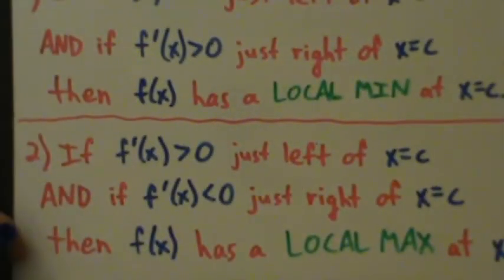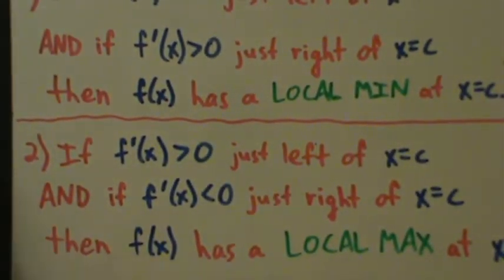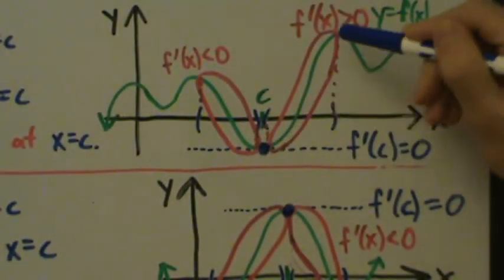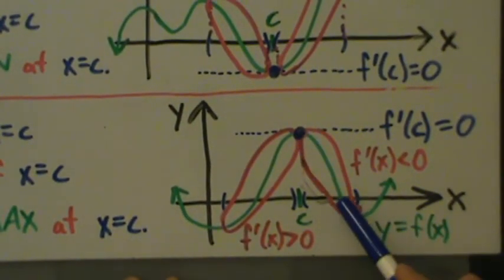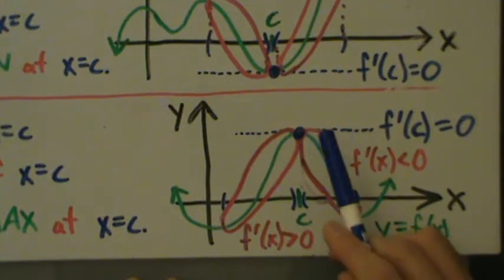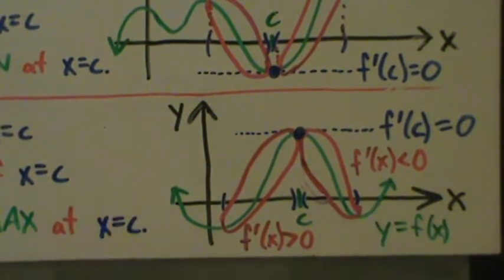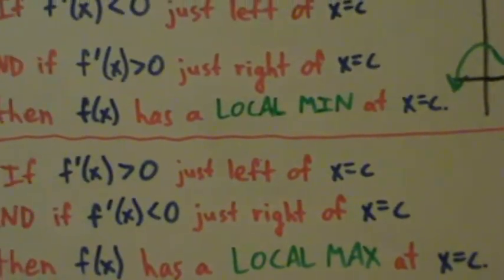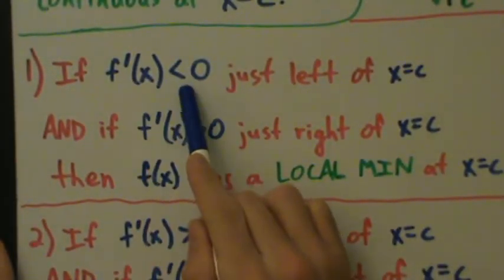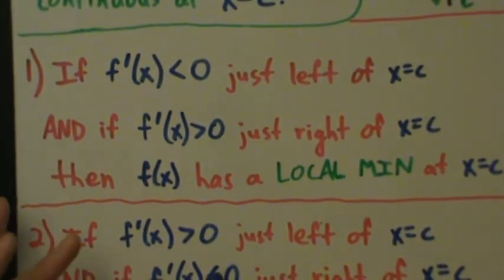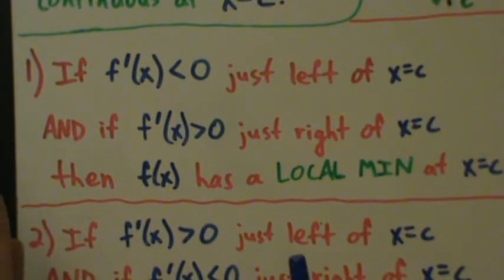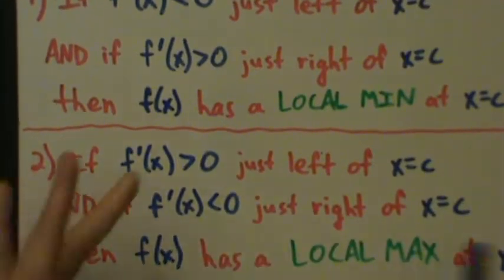We already know from the definition of local min and local max that if a function decreases and then starts increasing, it went through a local min; and if it increases and then starts decreasing, it went through a local max. The first derivative test expresses that in terms of derivatives. And why do we need to do that? Because f prime of x being negative or positive is something we can work with mathematically without a graph — we can take derivatives, find critical points, and evaluate the derivative in each interval.